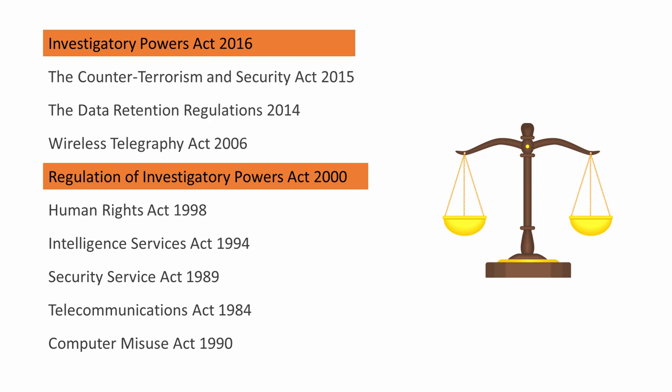The Regulation of Investigatory Powers Act, or RIPA for short, came into force on 26 July in the year 2000. The Investigatory Powers Act came into force 16 years later, on 29 November 2016. The Investigatory Powers Act was intended to define all of the regulations for covert surveillance and data gathering in one act. It updated and replaced much of RIPA, and has been amended on several occasions since.